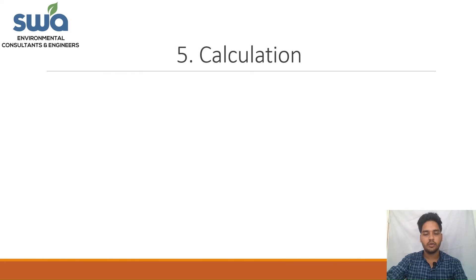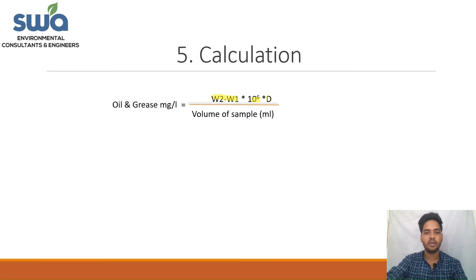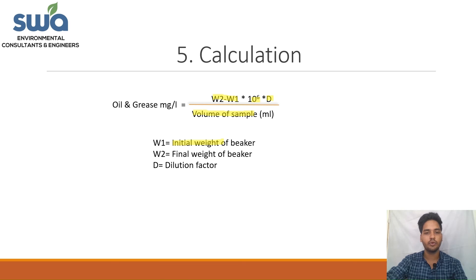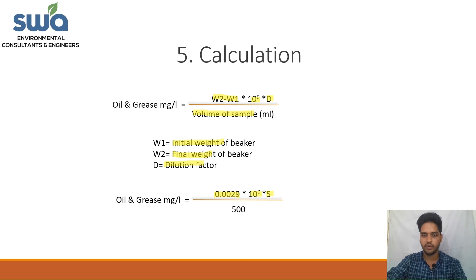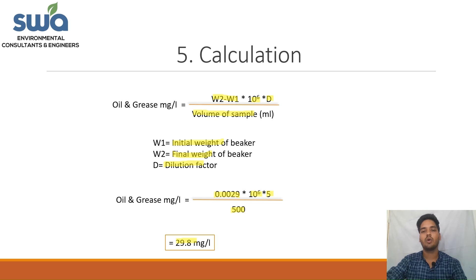Now let's understand the calculation for oil and grease. The formula is: Oil & Grease (mg/L) = (W2 − W1) × 10⁶ × D / Volume of sample (mL), where W1 is the initial weight of the beaker, W2 is the final weight, and D is the dilution factor. Here, the difference W2 − W1 is 0.0029 g, multiplied by 10⁶, multiplied by the dilution factor 5, divided by the total sample volume of 500 mL. The result is 29.8 mg/L, which is the oil and grease concentration in the given sample.